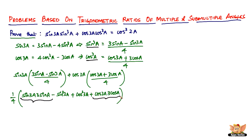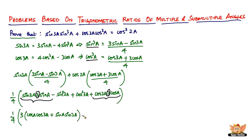Now grouping the terms, we notice that 3 is common in two of them. Taking out 3, we get: 3·[cos(a)·cos(3a) + sin(a)·sin(3a)] + cos²(3a) − sin²(3a).